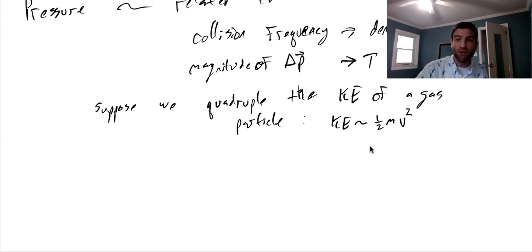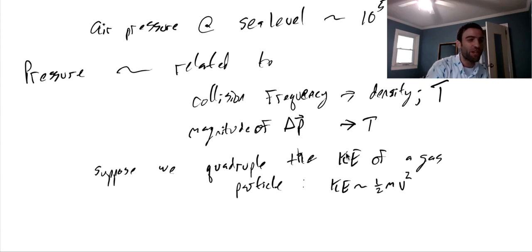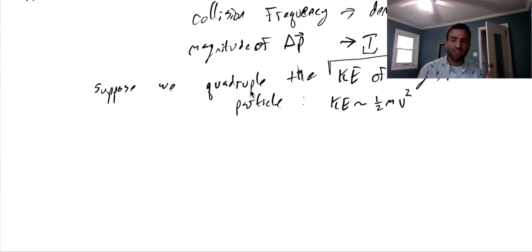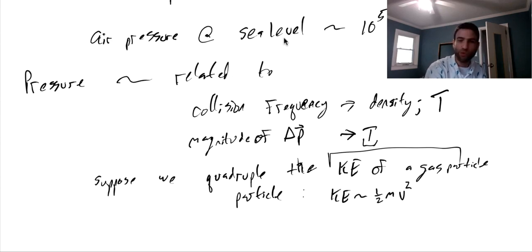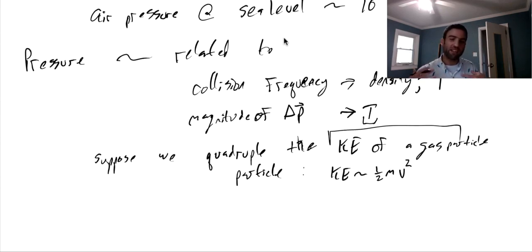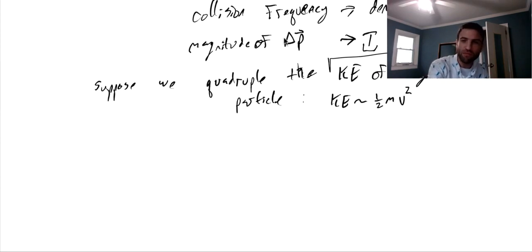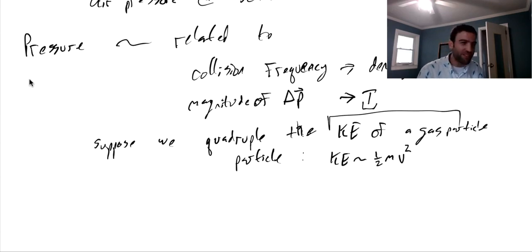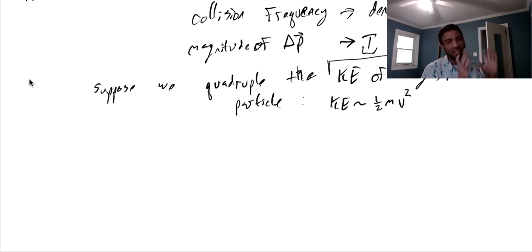One way to measure this internal kinetic energy of the gas is temperature. From what we've discussed, pressure should be something like the density times the temperature. If we quadruple the temperature, we quadruple both the collision frequency and momentum change aspects. If we double the density, we double the number of collisions — so that also doubles the pressure. So intuitively, pressure is proportional to density times temperature. But we have to be careful with temperature.